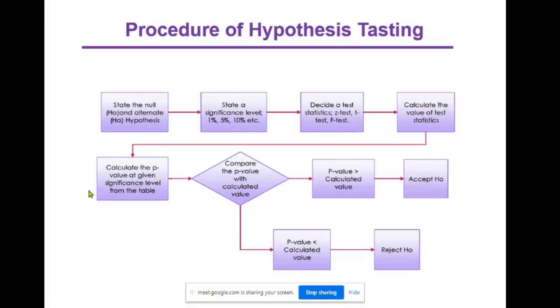Now compare the table value and calculated value. P-value means table value. If p-value is greater than the calculated value, the null hypothesis is accepted. If p-value is less than the calculated value, then the null hypothesis is rejected.